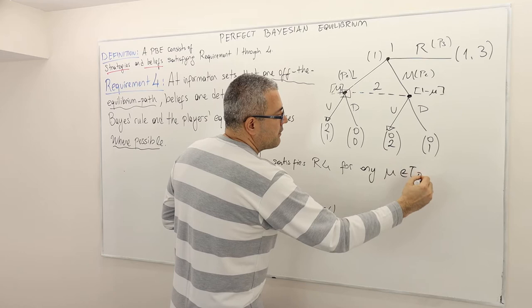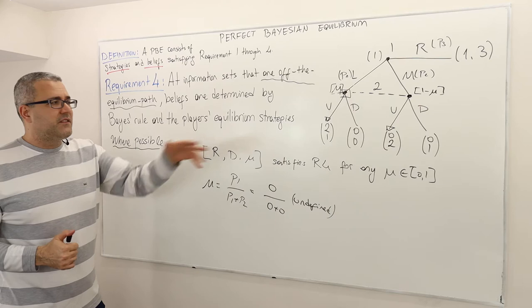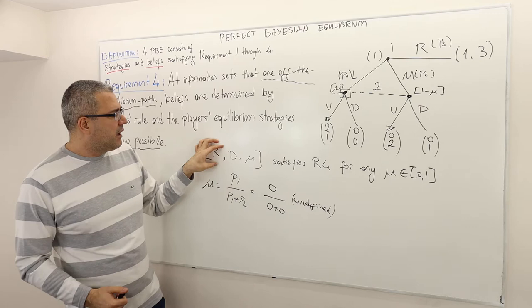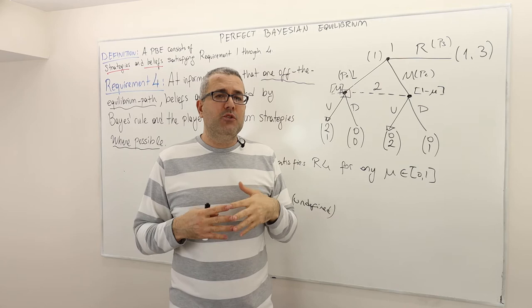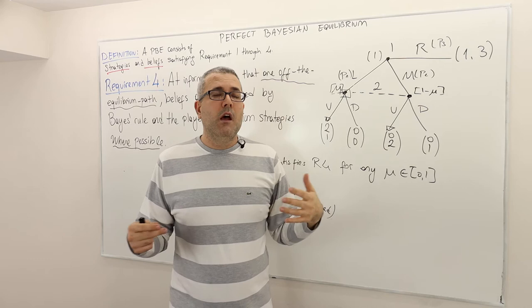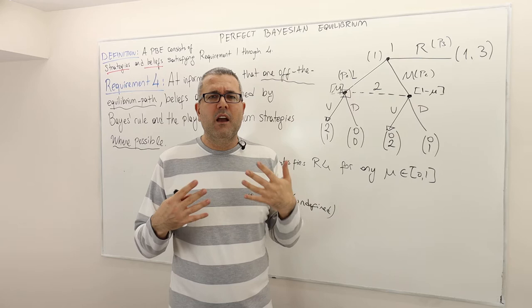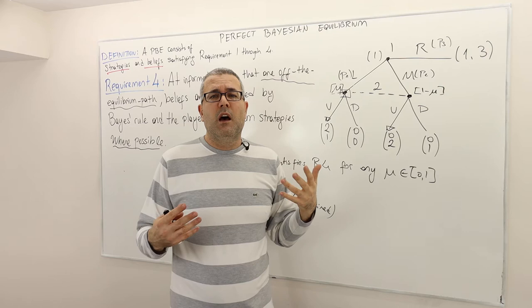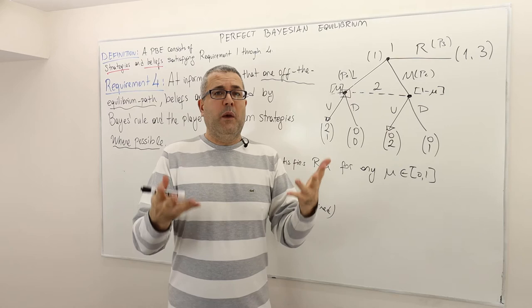But what does 'where possible' mean? Before giving the next example, let me give you the intuition. Here, remember, R is the strategy of player two — she believes her opponent is going to play right with probability one. So in this game, she doesn't actually expect to make a move, because she believes her opponent will play right and finish the game. But all of a sudden, somebody knocks on her door and says: 'Dear player two, it's your time to choose your action.' She's facing something completely unexpected.